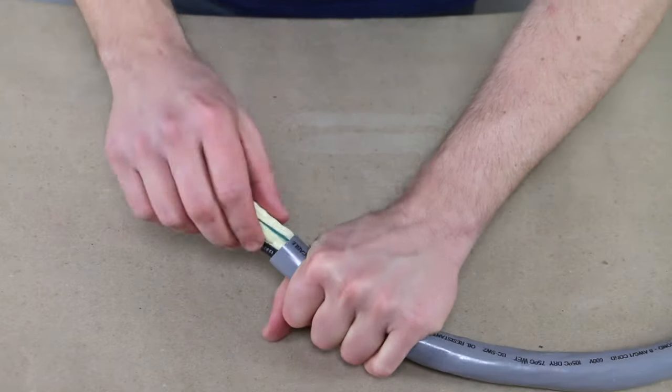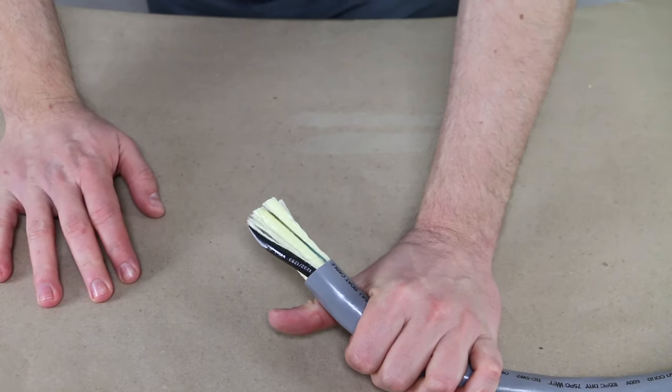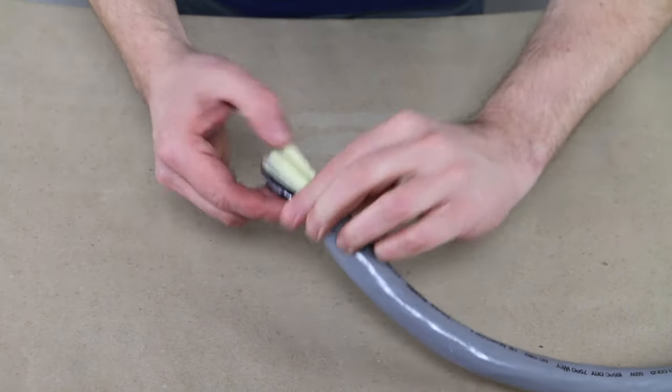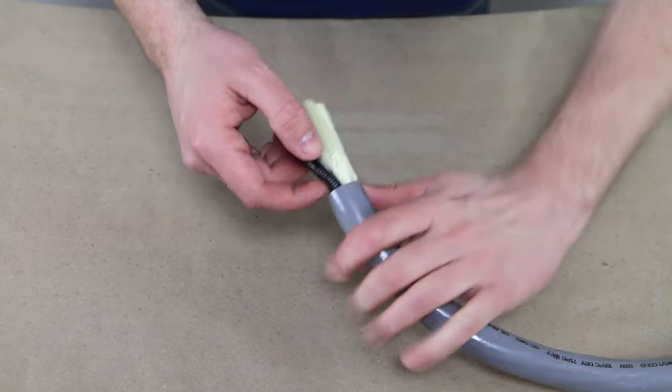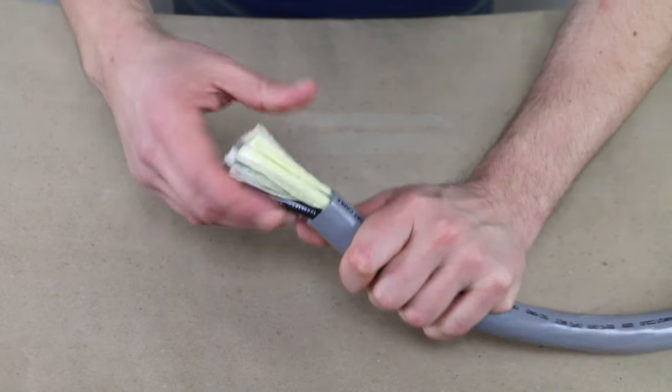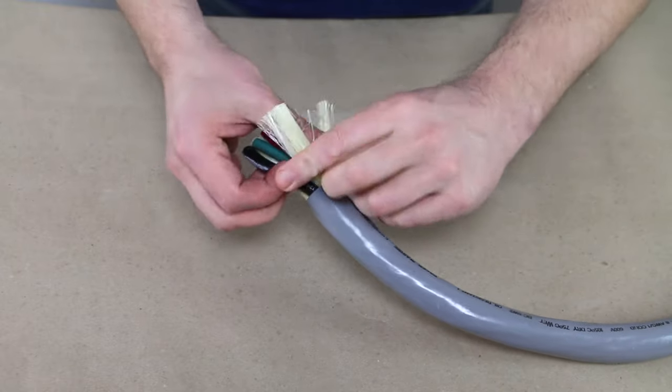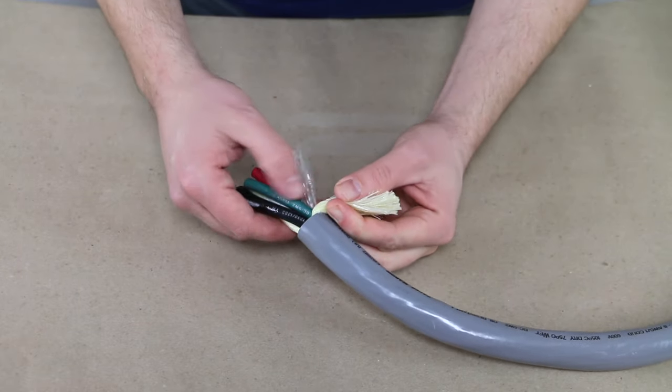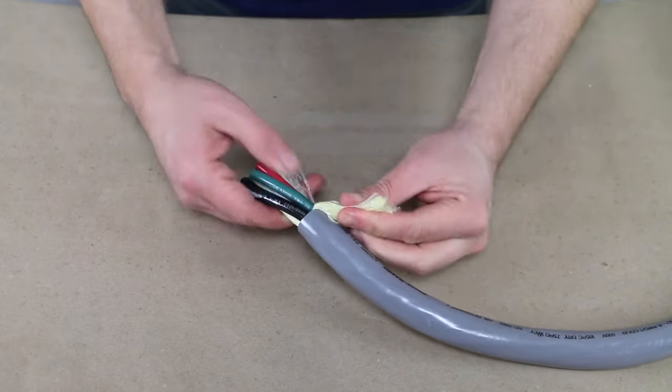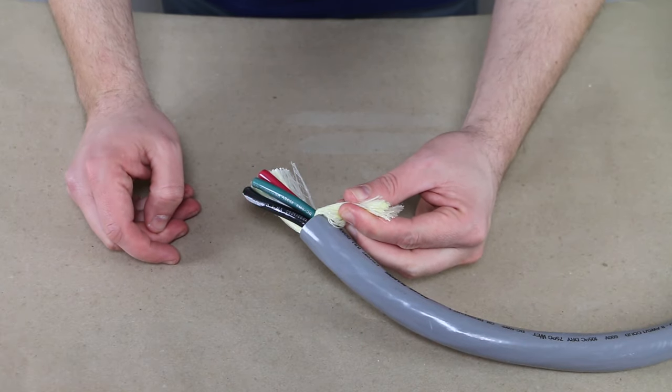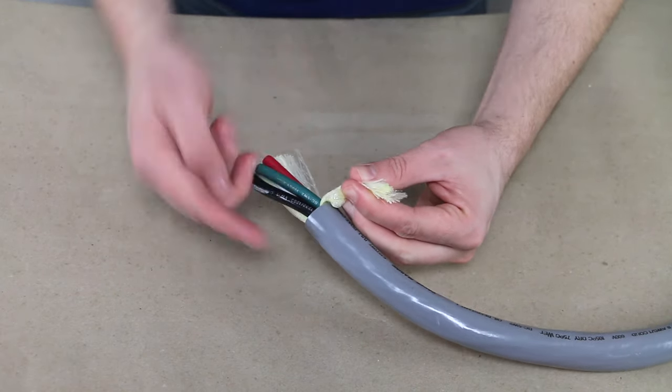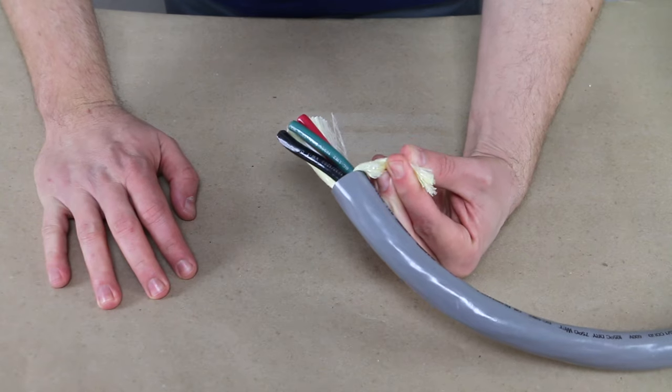Well, that did not go as smoothly as I would have liked, but you can see our conductors are safe and we have not cut into them. We would just come in with some scissors and trim off this nylon rope material, and we have a nice clean strip job around the jacket.